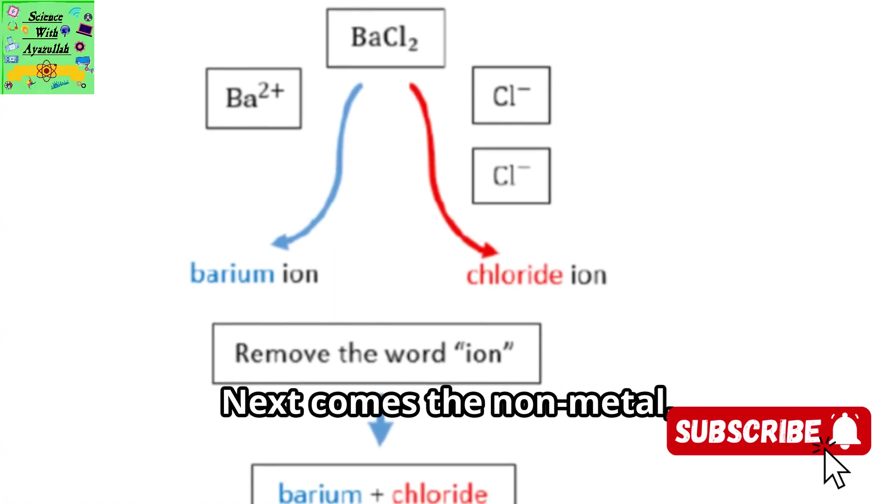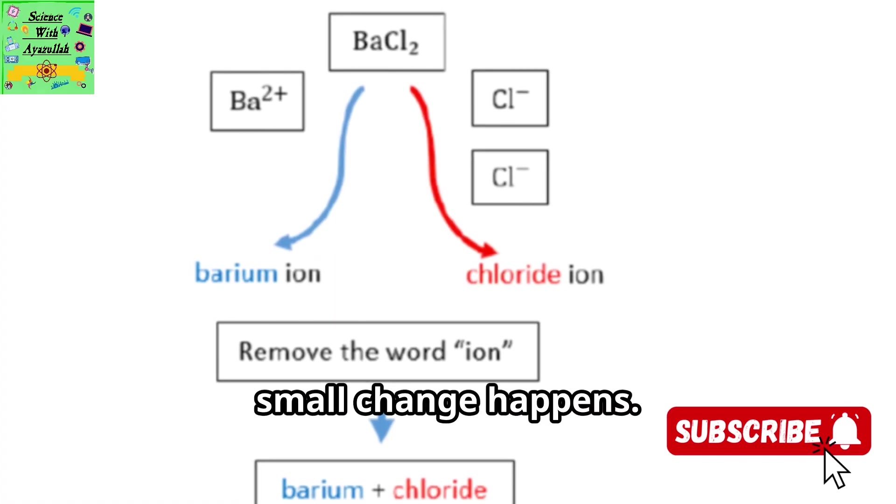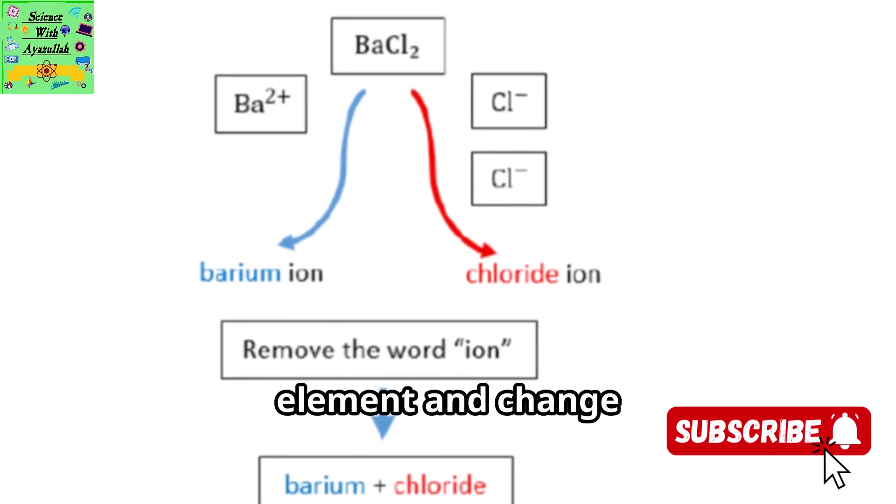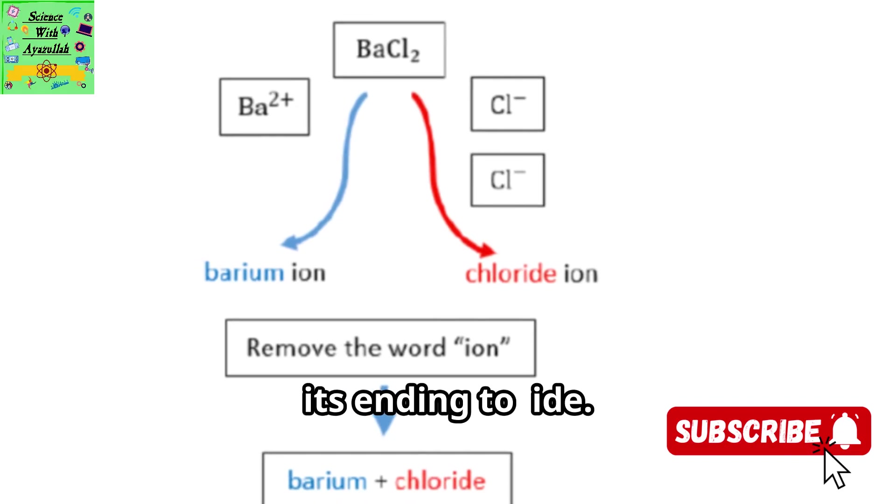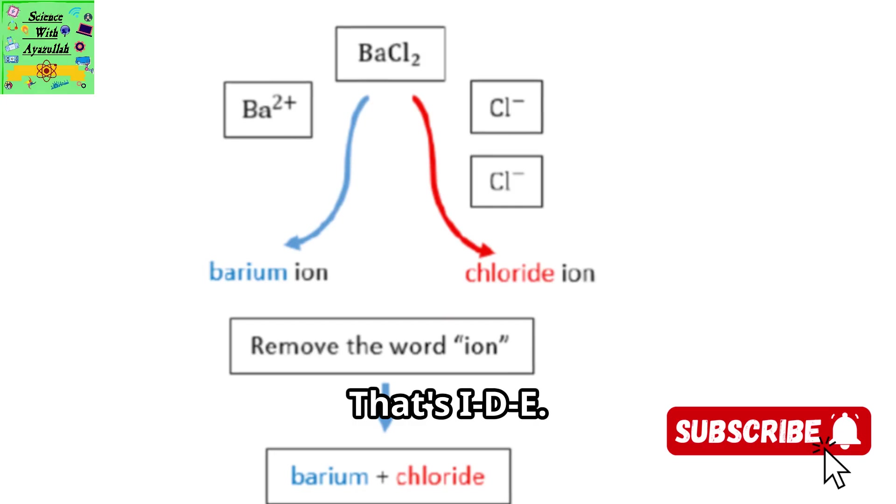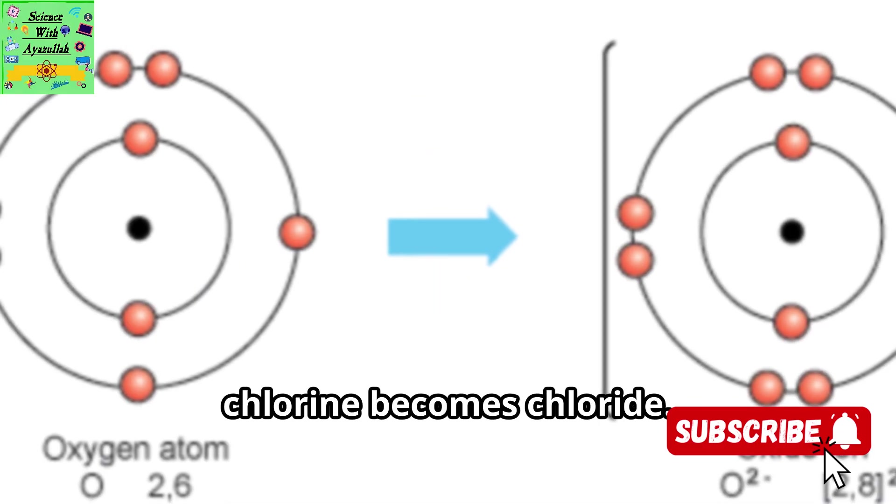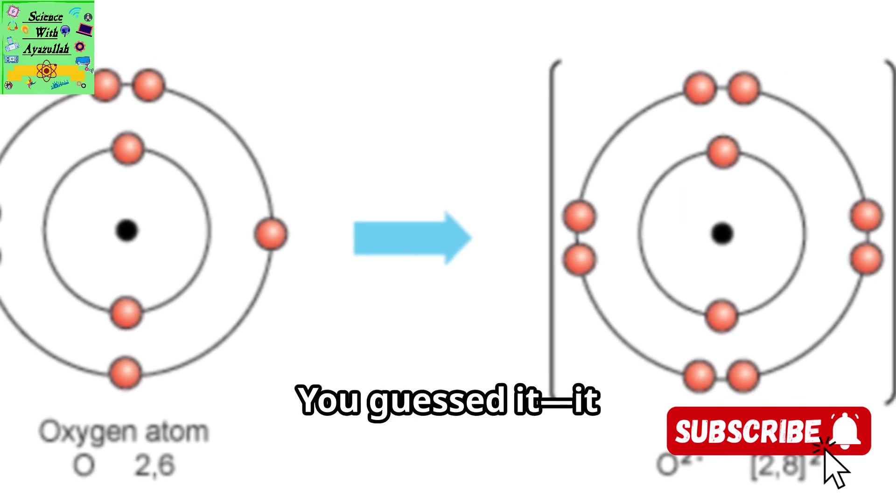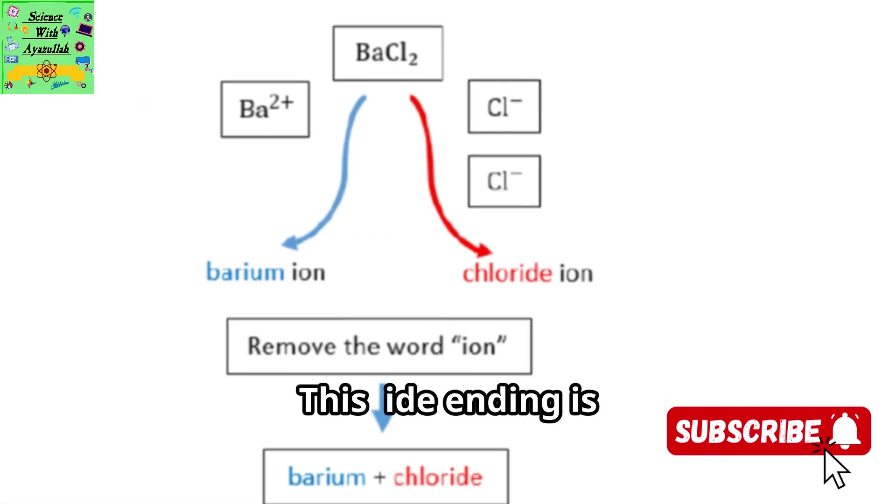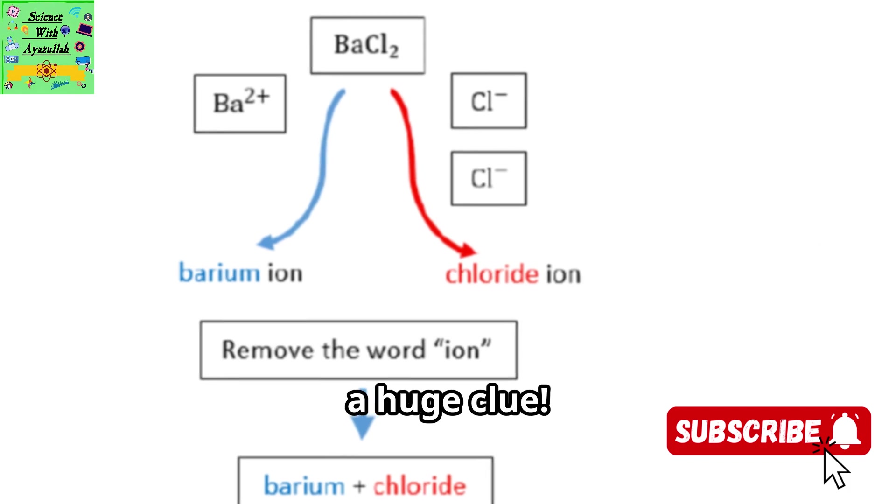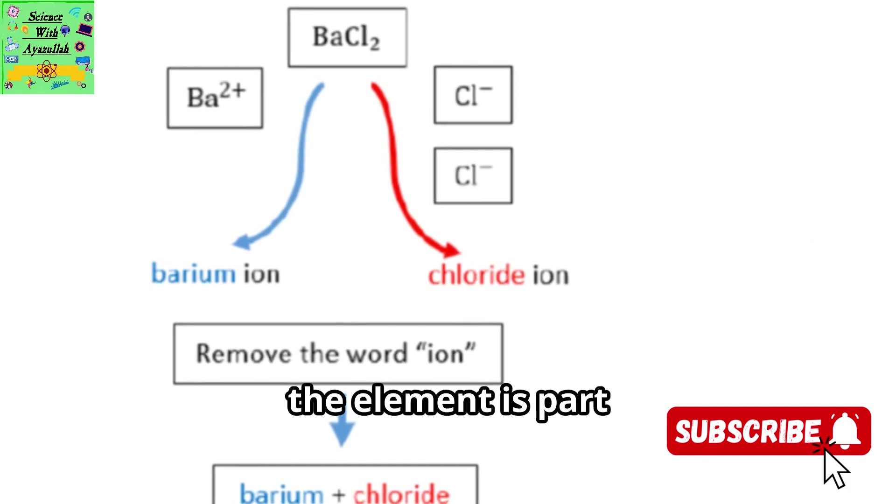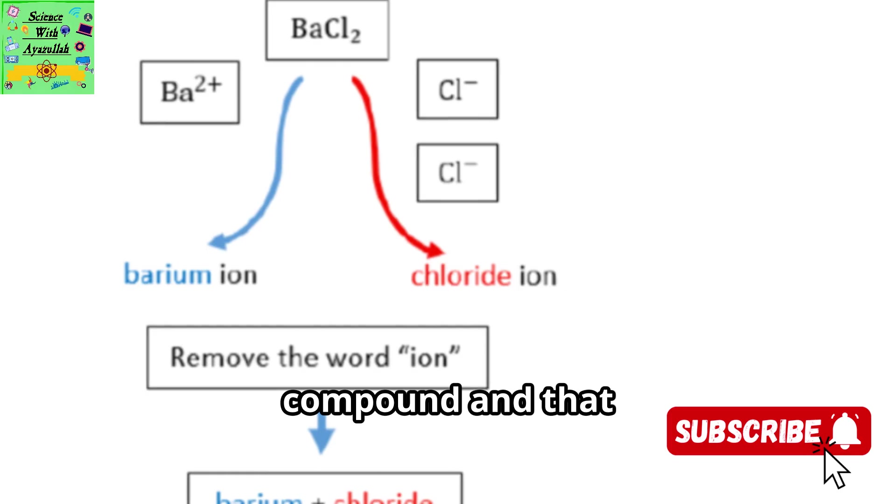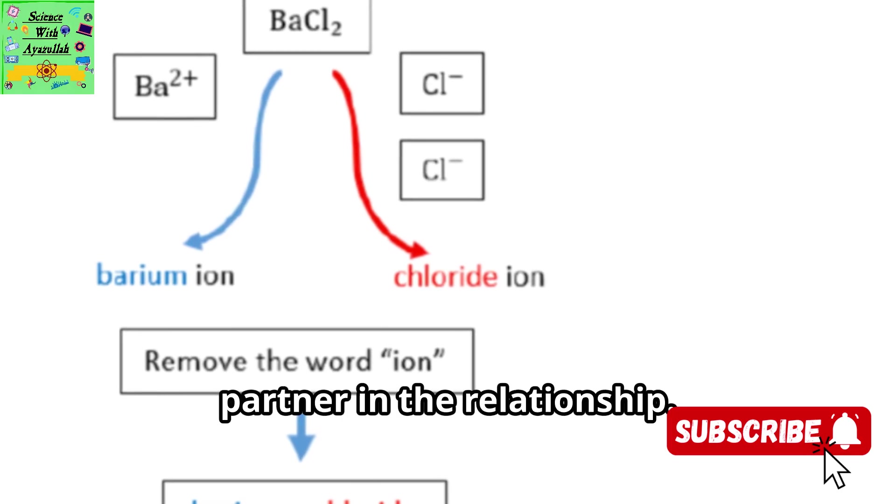Next comes the nonmetal, and this is where a small change happens. We take the name of the nonmetal element and change its ending to IDE. For example, the element chlorine becomes chloride. The element oxygen becomes oxide. And sulfur? You guessed it. It becomes sulfide. This IDE ending is a huge clue. It tells you that the element is part of a simple two-element compound and that it's the nonmetal partner in the relationship.